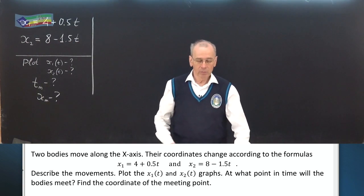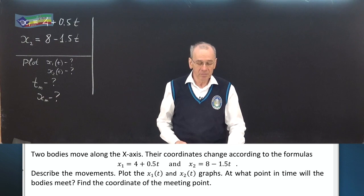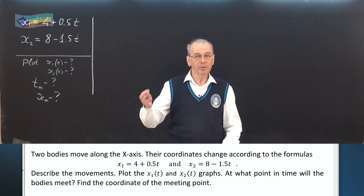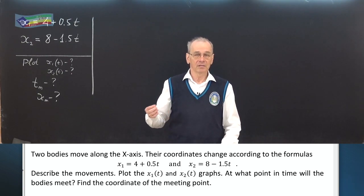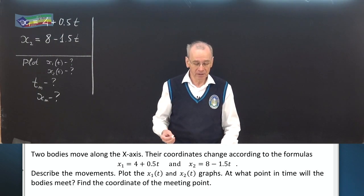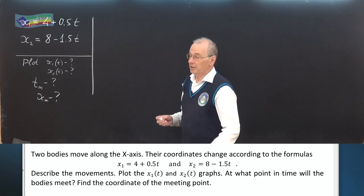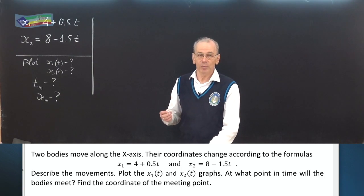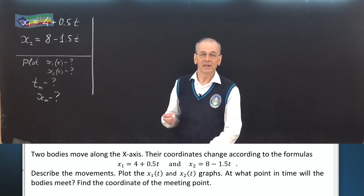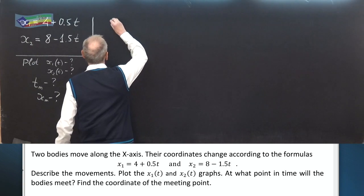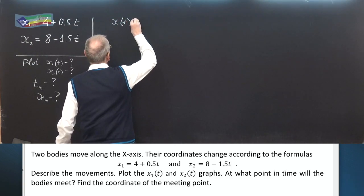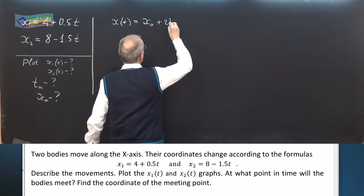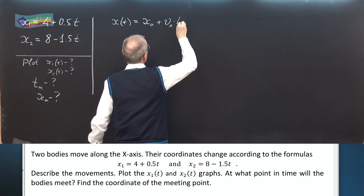What does it mean to describe the movements? We should find the initial position of both bodies and their velocities or their speed. To answer the question, let us write down the standard formula for uniform motion in a straight line: x versus t equals x₀ plus vₓ times t.